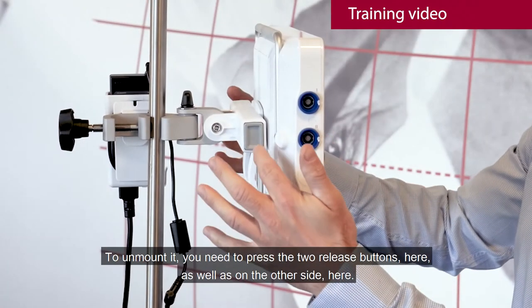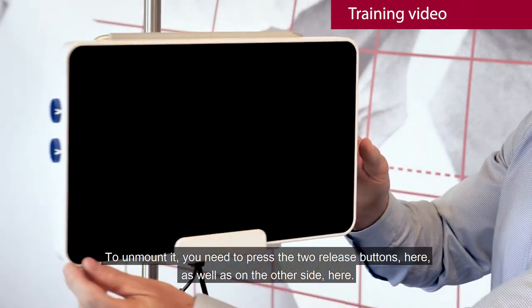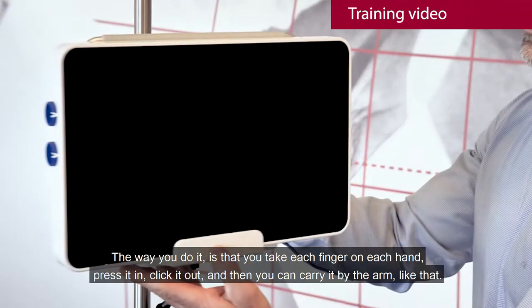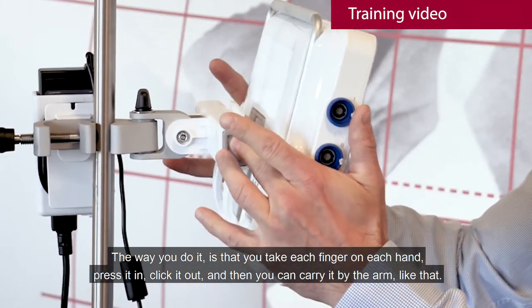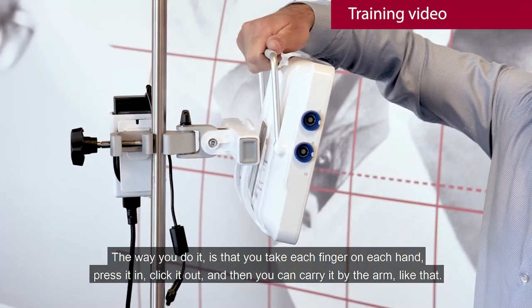To unmount it, you need to press the two release buttons here as well as on the other side here. The way you do it is that you take each finger on each hand, press it in, click it out, and then you can carry it with the arm like that.